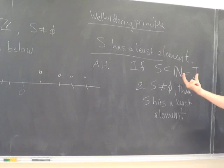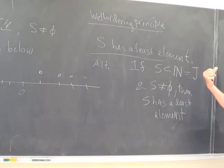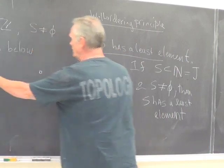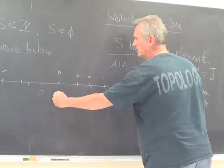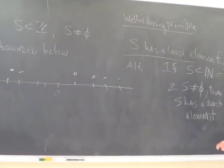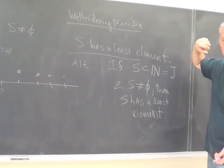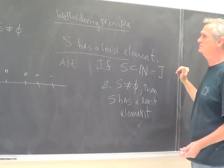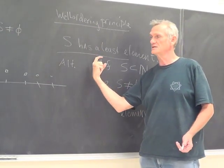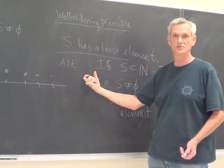On the other hand, the stronger case can follow from this case because if we start out with a subset that is bounded below, we could shift the entire subset until it's bounded below by zero, find the least element in the shifted set, and then shift back. Either well-ordering principle is something you won't have trouble disputing — until you get to the real numbers, where you can have non-empty subsets that are bounded below but don't have a least element. In the integers, that doesn't happen.